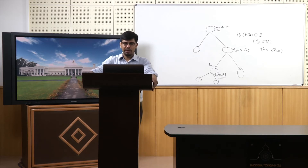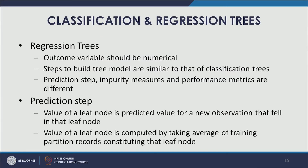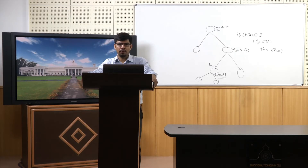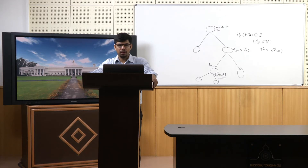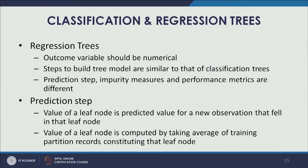Now let's start our discussion on regression trees. In regression trees, the outcome variable should be numerical, so we look to predict the value of a new observation rather than its class. The steps to build regression tree models are quite similar to classification trees, but the prediction step, impurity measures, and performance metrics are all different.